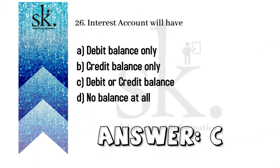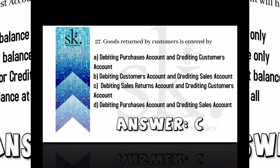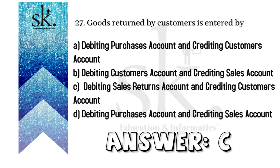The next question: interest account will be — now if you have received interest it will be a credit balance; if you have paid interest it will be a debit balance. Therefore it can either be a debit or a credit balance, so the answer will be C.